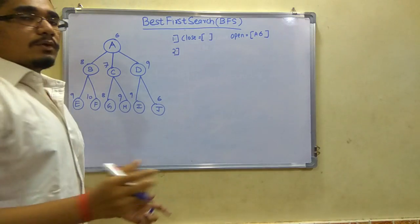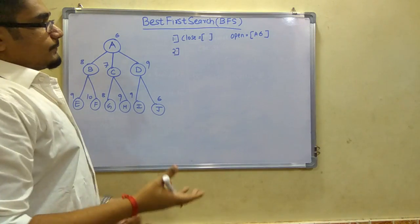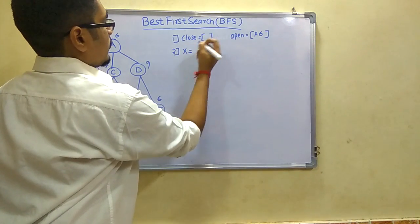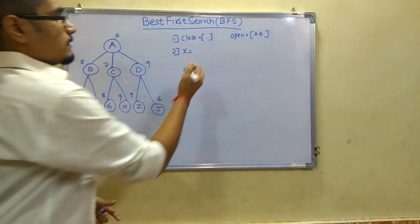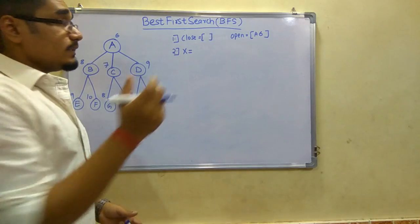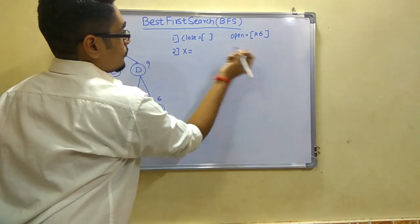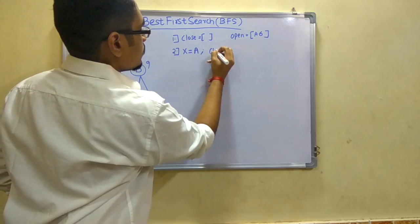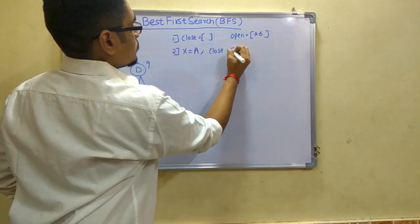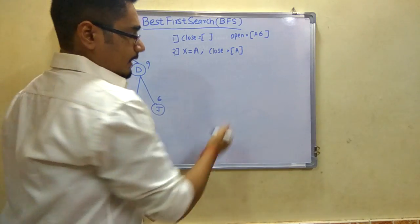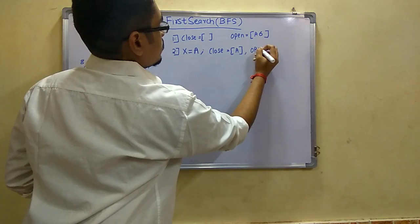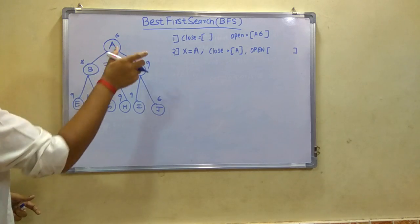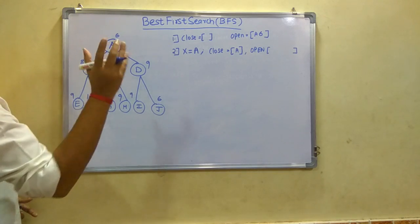This is the initial condition. Next we will explore it further. We have the node as A, so we take x variable for node representation. We will assign x to A and we will close this node.